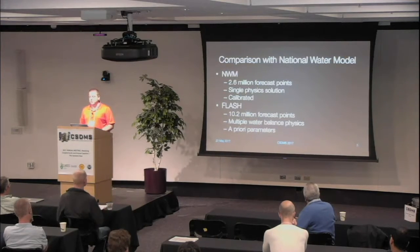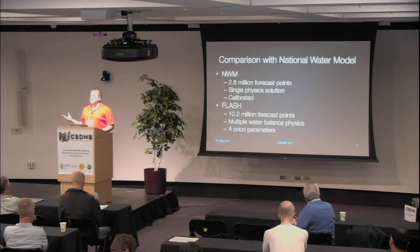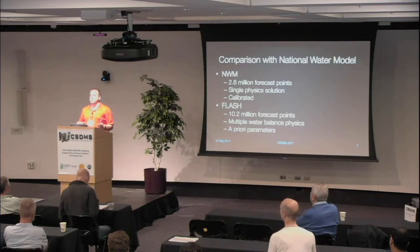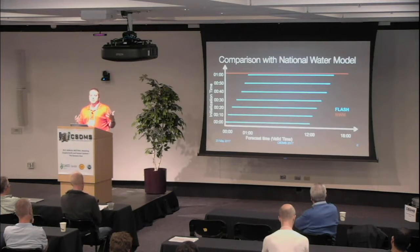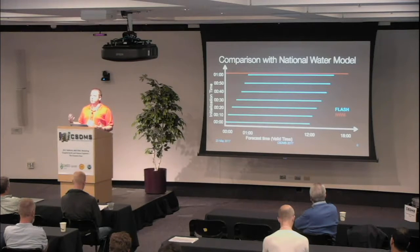If you're familiar with the National Water Model, which has also come online recently, here's a brief rundown of the differences. The National Water Model has 2.6 million forecast points; we have about 10.2 million. We have multiple water balance models, while the National Water Model only uses NOAHMP right now. The National Water Model calibrates; we don't — we use a priori parameters derived from estimates of the land surface and soil surface. The biggest difference is update frequency: FLASH runs every 10 minutes with a 12-hour forecast, compared to the National Water Model running every hour with an 18-hour forecast, giving you six runs per hour with FLASH.